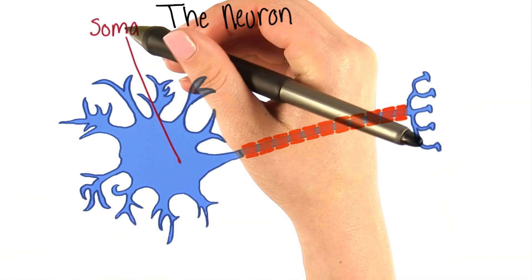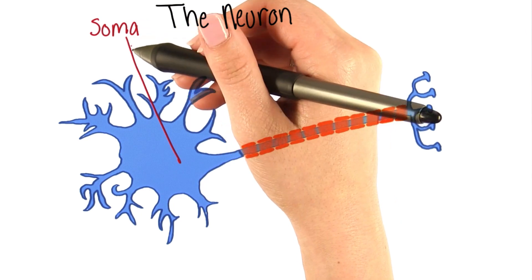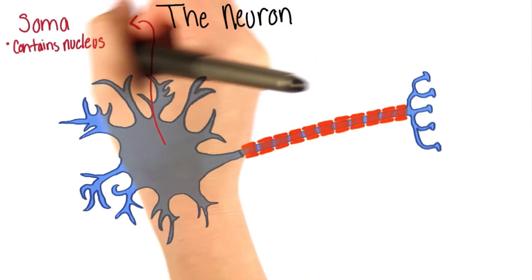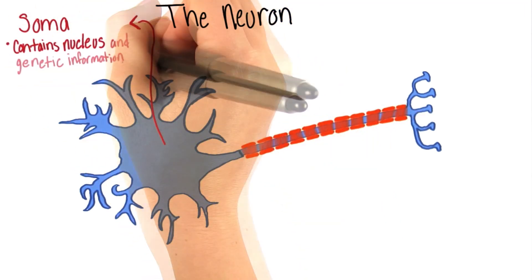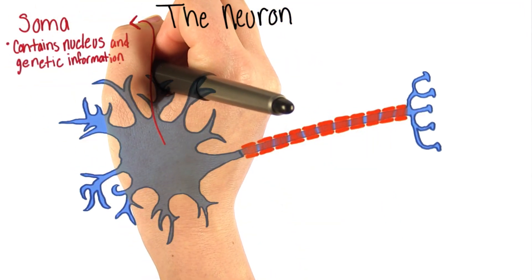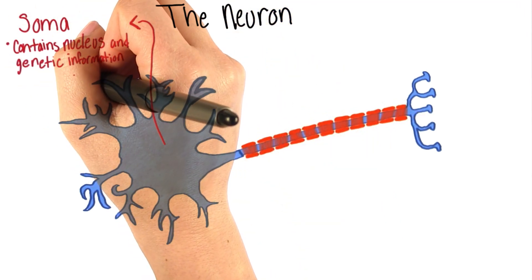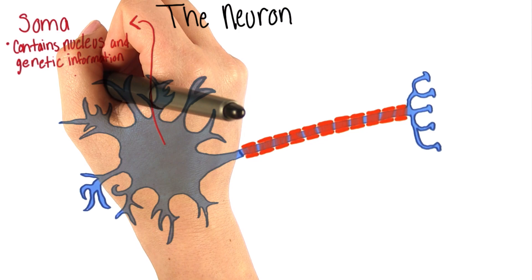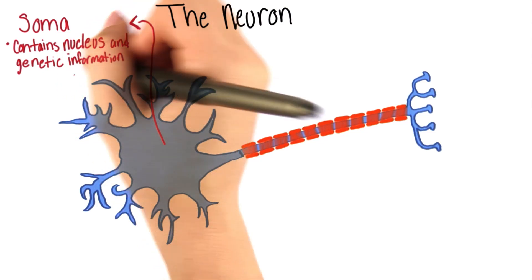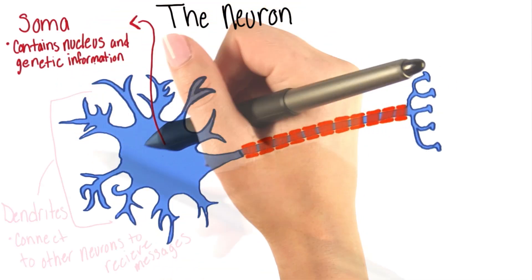First, we have the cell body, or the soma. It contains the nucleus and genetic information, along with components for the maintenance and function of the neuron.